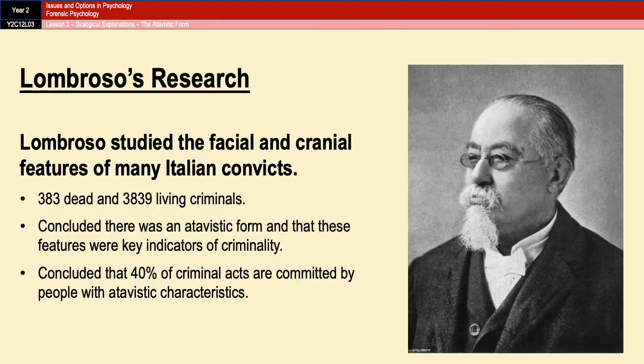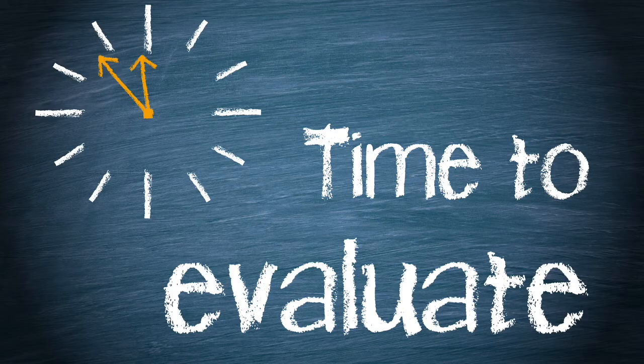So that is the atavistic form — everything you need to know for an outline. There isn't really very much to say about the atavistic form; it is one of the shorter topics in the forensic psychology chapter, and so that means we can move straight on to our evaluation points.